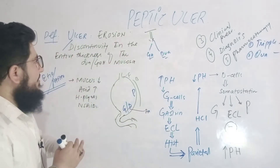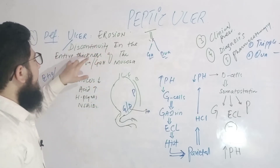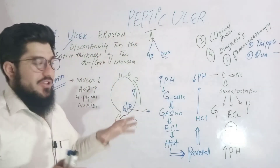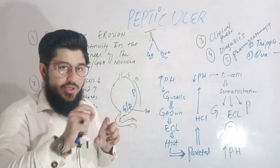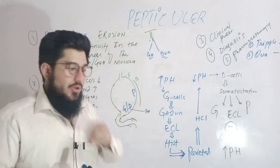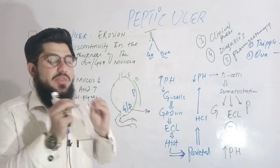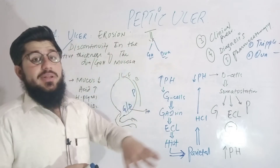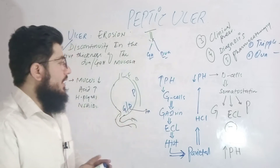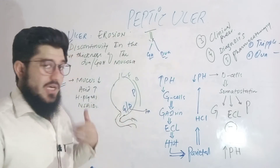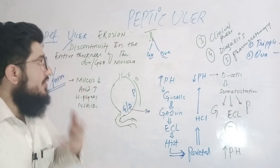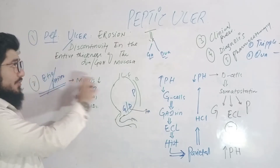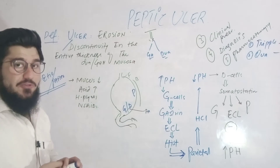Here is the formal definition: a discontinuity in the entire thickness of the gastric or duodenal mucosa is known as peptic ulcer. You can write any definition — this formal one or the simpler explanation — in your notebook or practical exams. These are exact, to-the-point definitions of peptic ulcer, gastric ulcer, duodenal ulcer, and simply ulcer.